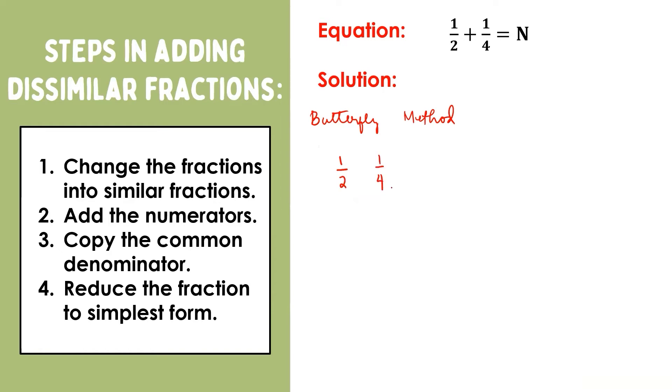In this method, we need to multiply this denominator to this numerator. 4 × 1 = 4. We put our answer here. And this denominator will be multiplied to this numerator. 2 × 1 = 2. We put our answer here. Then we multiply the denominators. 2 × 4 = 8. The answer will be put here. Now we have completed our butterfly.